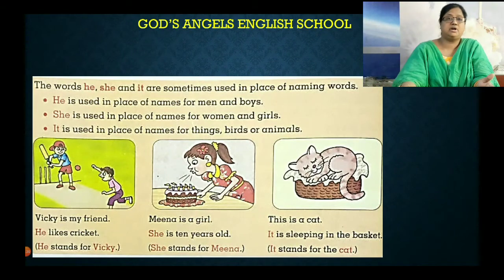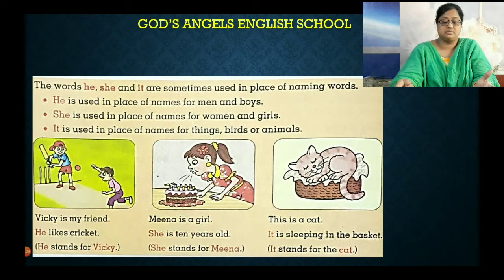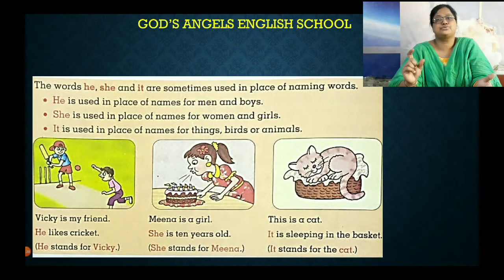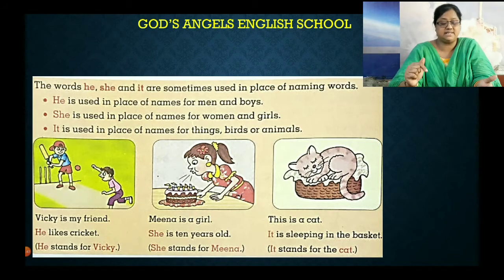The words he, she, and it are sometimes used in the place of naming words. नाम की जगह पर हम 'he', 'she', 'it' use कर सकते हैं. अगर boy है तो वहाँ पर he use किया जाएगा. Girl है तो she use किया जाएगा. और IT — things, birds, or animals के लिए use करते हैं.